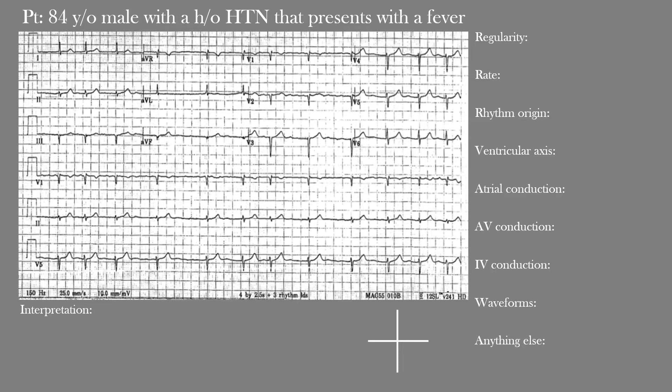Before we get started, let's review the approach we've been using to interpret EKGs. We have the patient's clinical presentation and the EKG below it. On the right side of the screen we have a list we'll go through before making our final interpretation. First, there is the regularity of the rhythm — are we dealing with a regular or irregular rhythm, and if irregular, is it regularly irregular or irregularly irregular? Next we have the heart rate.